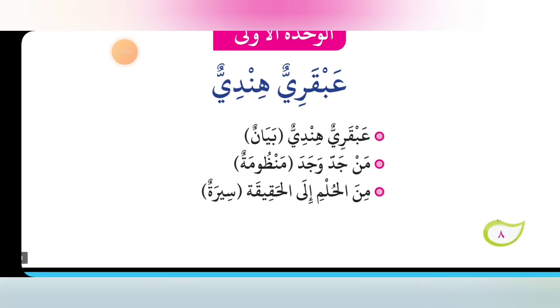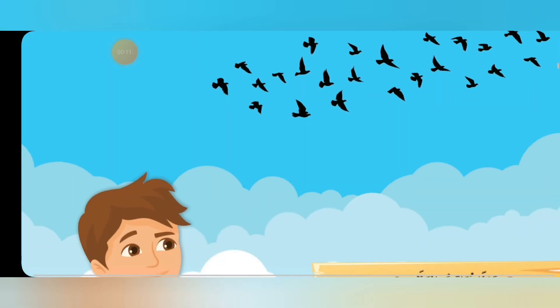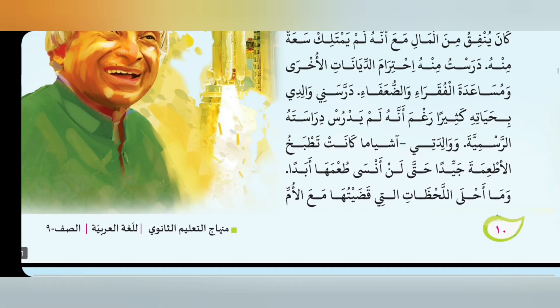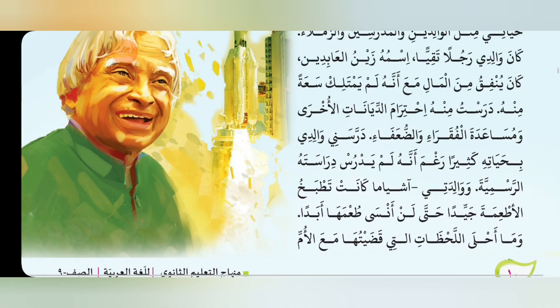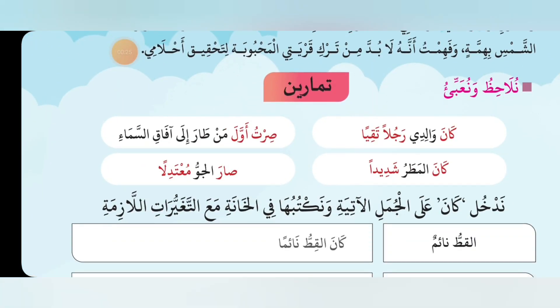Hello everyone, it's me Abdul Basit from Kerala. Welcome to my CVSE Arabic class of 9th standard. As you all know, we discussed the first chapter — its translation of 'The Indian Genius,' a chapter about the great personality APJ Abdul Kalam. Now we are looking at the exercises of this chapter, the first one being the Tamarin exercises.